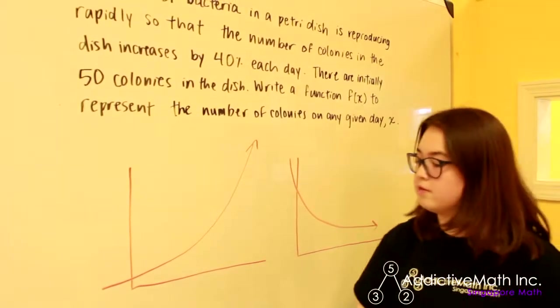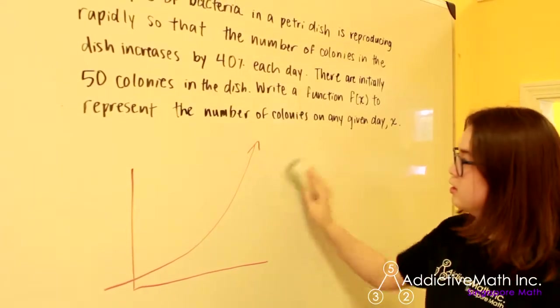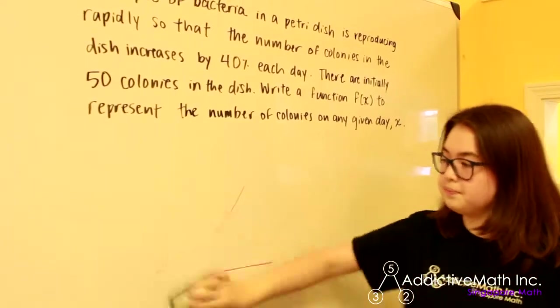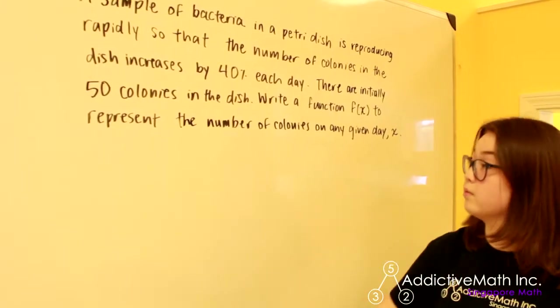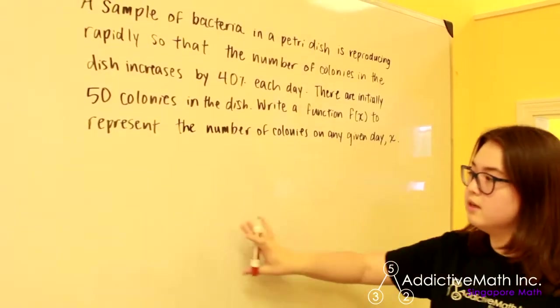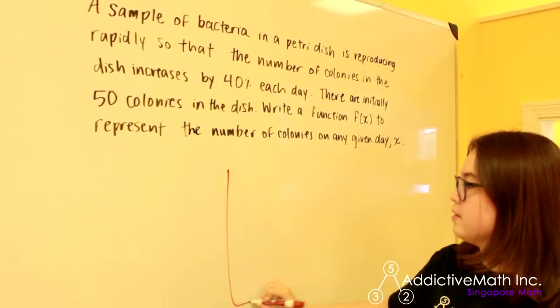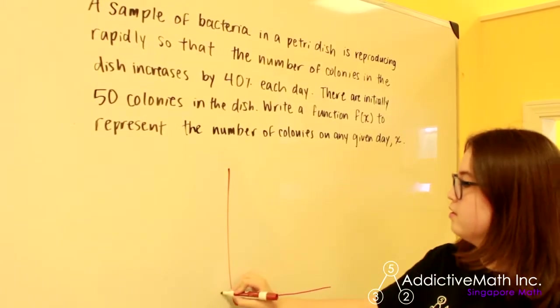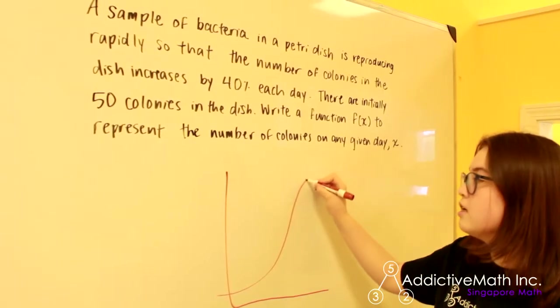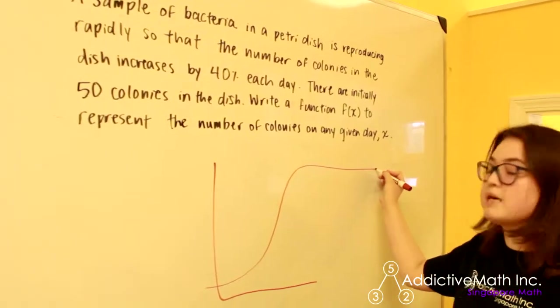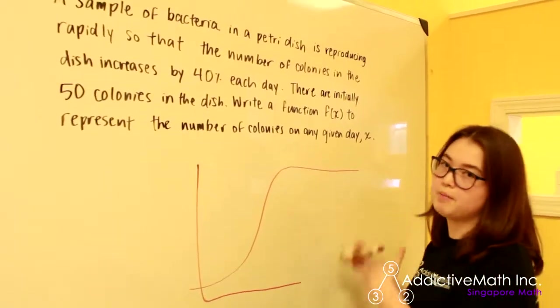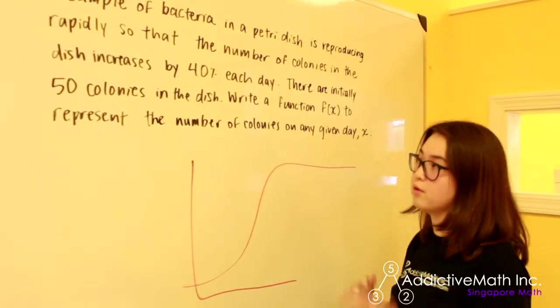In some of the upper-level math courses, we don't represent the growth and decay of populations using the exponential curve. Instead, we represent them using a logistic curve. So it grows exponentially, but then it also tapers off at some point because populations have a carrying capacity. They don't grow forever.